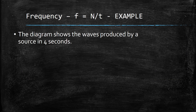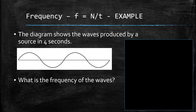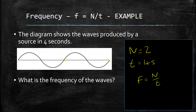Example. The diagram shows the waves produced by a source in four seconds. What is the frequency of the waves? First of all, we need to determine the number of waves. Looking at the diagram, I can see one complete wave, two complete waves, so N is equal to two. We're given the time in the question: T is equal to four seconds. We then apply the equation: F is equal to N over T, equal to two over four, which is equal to 0.5 Hertz.